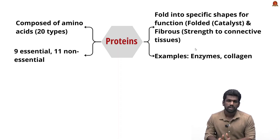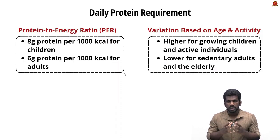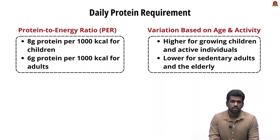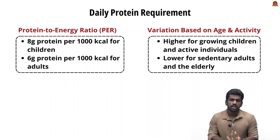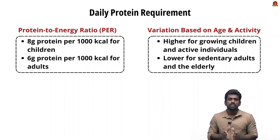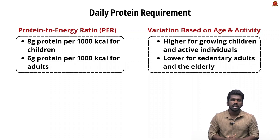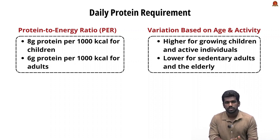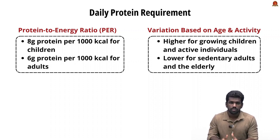Protein requirement should be measured in terms of the protein-to-energy ratio. Food must provide an adequate ratio — at least 8 grams of protein per thousand kilocalories for children, and 6 grams of protein per thousand calories for adults.